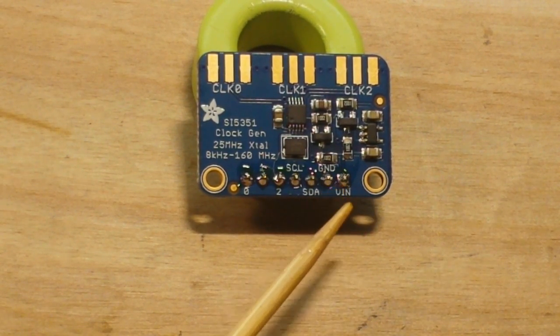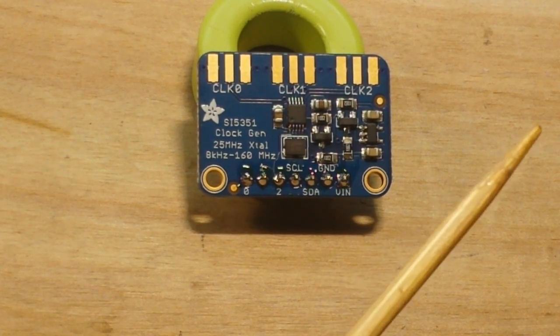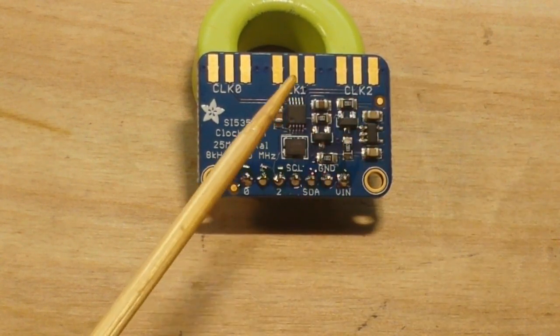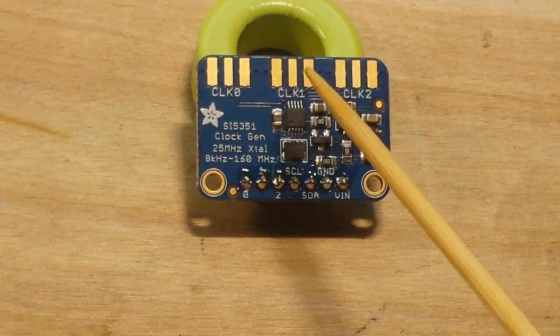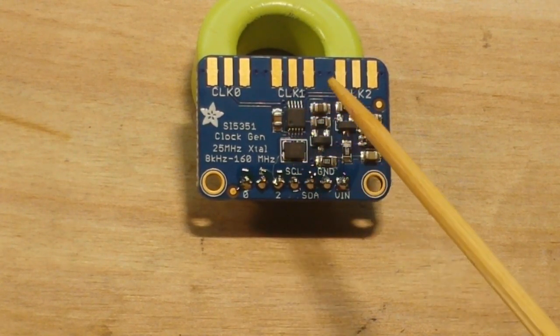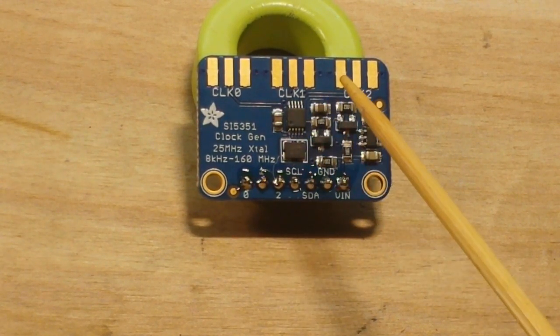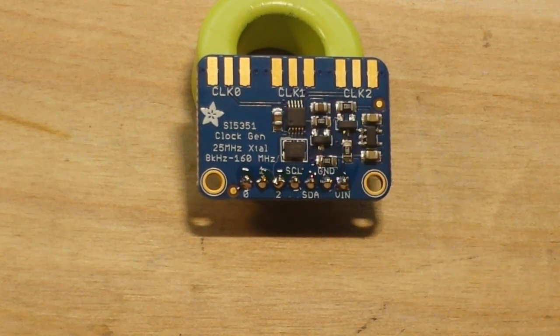And then we have ground and power and since this is a nice Adafruit product you know it's going to have not only a voltage regulator but also some level converters because this is a 3.3 volt logic chip but with the level converters you can use it with your Arduino and 5 volts at no trouble whatsoever.